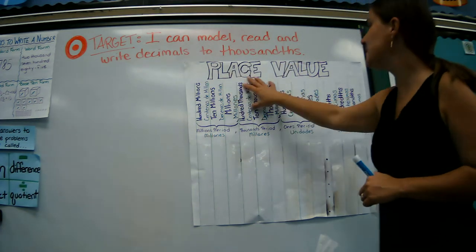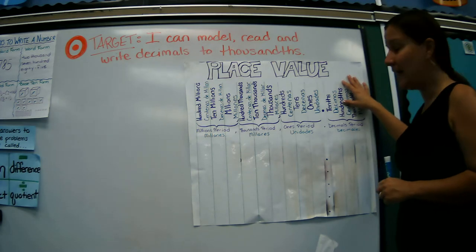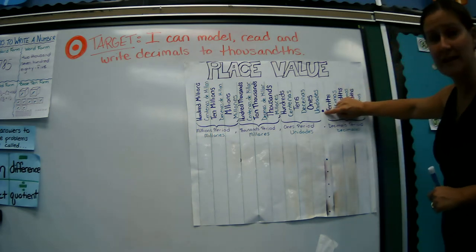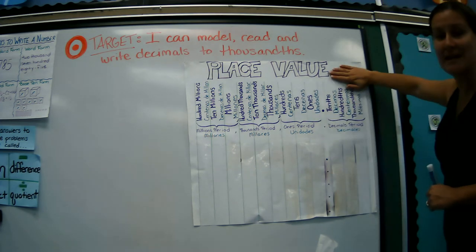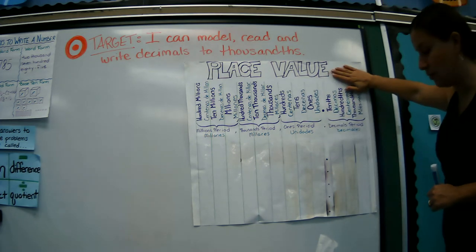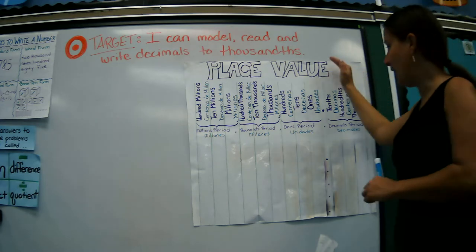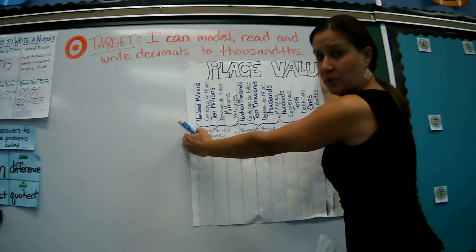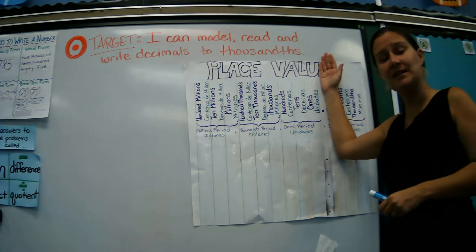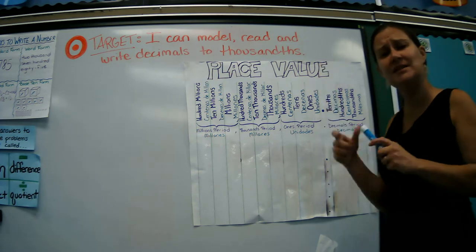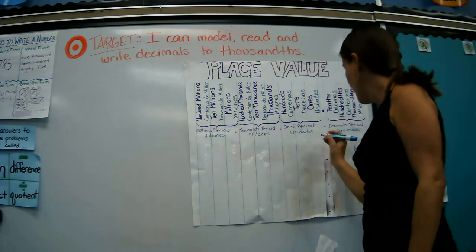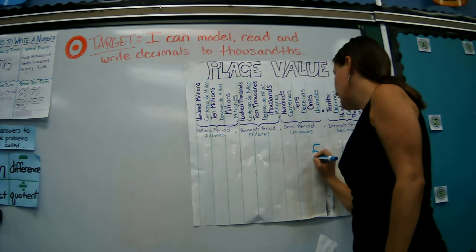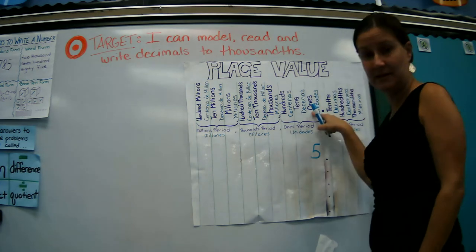First, this is our place value chart. Over here, you'll see a decimal point. These are the numbers that are found in the decimal place. We're going to pause on that for a moment, and I want you to just focus on the whole numbers — these are things that you already know. So let's just take five ones — we're going to put a five right here in the ones place.